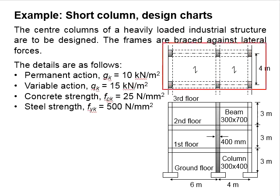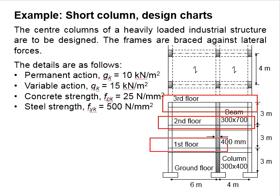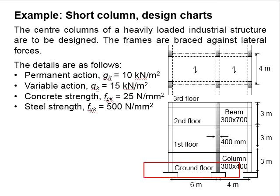This shows the key plane of the structure. The frame is 4 m spaced from each other. Each frame has 3 floors from the ground floor, first floor, second floor, and third floor. The beam size is 300 × 700. The column size is 300 × 400. The column in this direction is 400 mm. This column is to be designed. The effective height is 3 meters for each story.